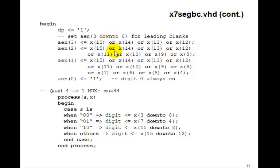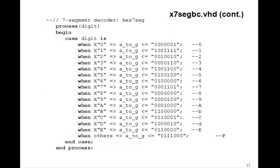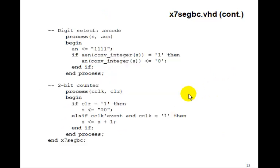Other than this, we will set our A enable, just like we did before. You can go back to lesson 28, where we did the X7SegB to see how this works. This is going to give our leading blanks. Here's our quad 4-to-1 multiplexer. Here's our 7-segment decoder. This is all the same as we had before.